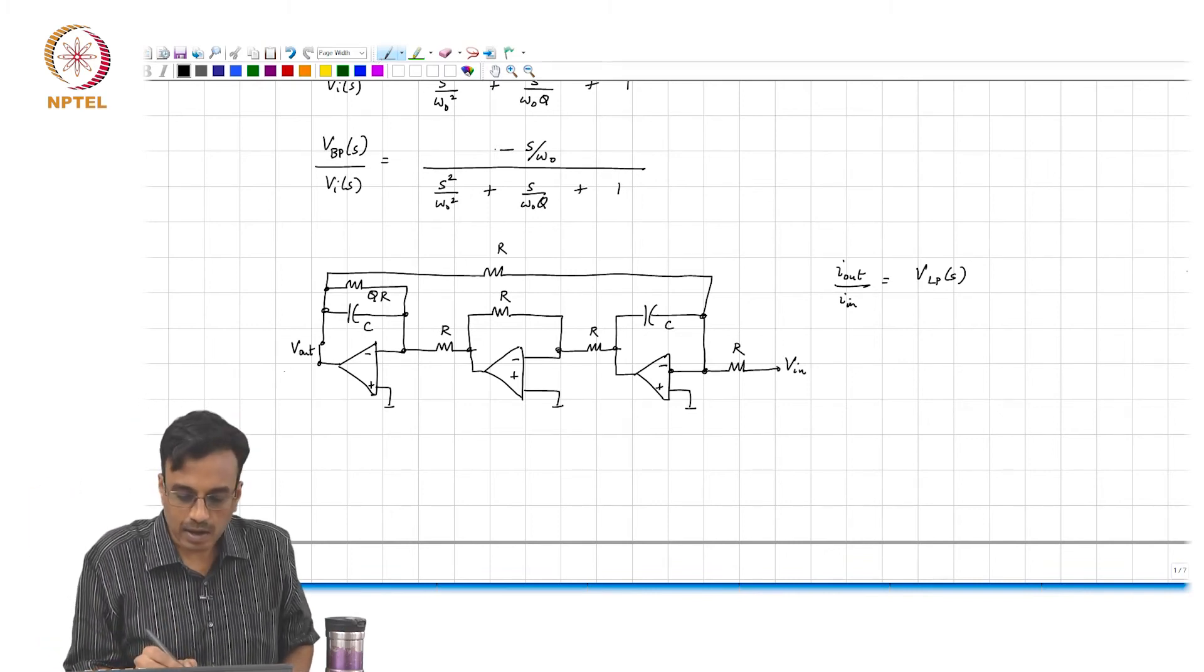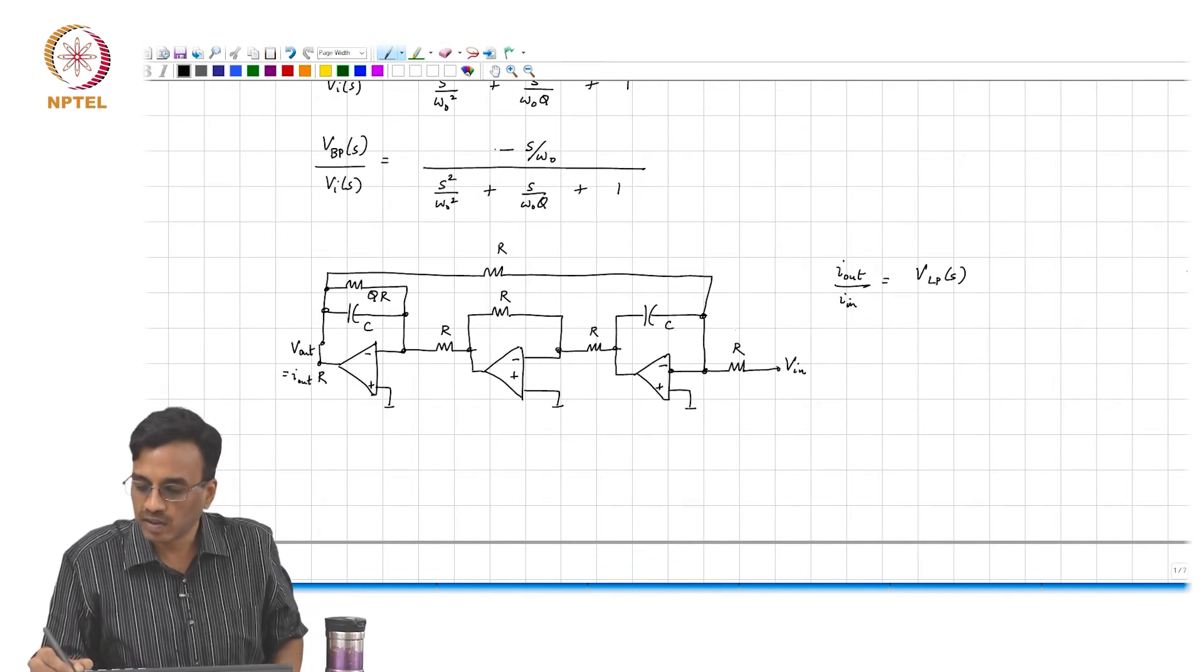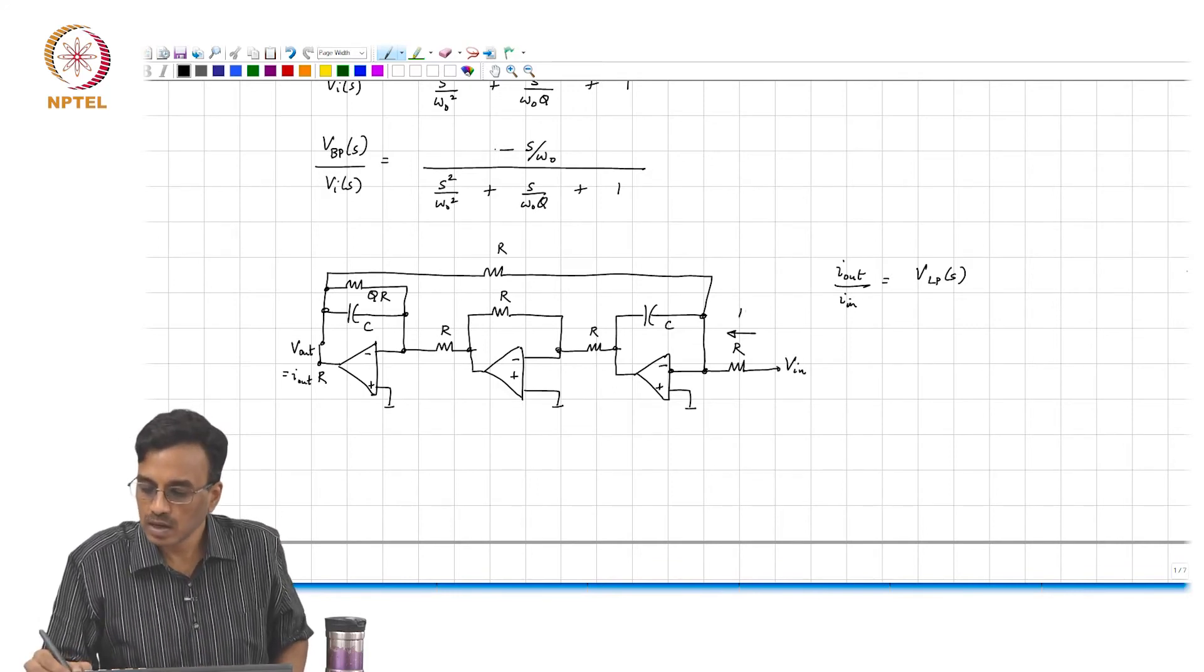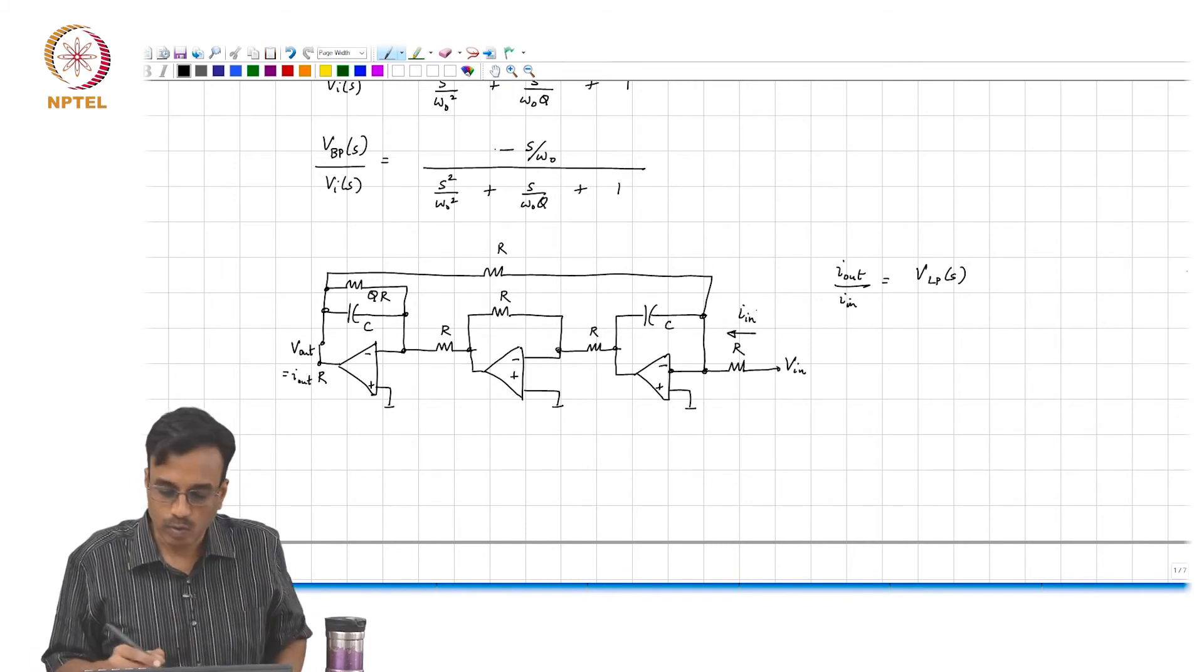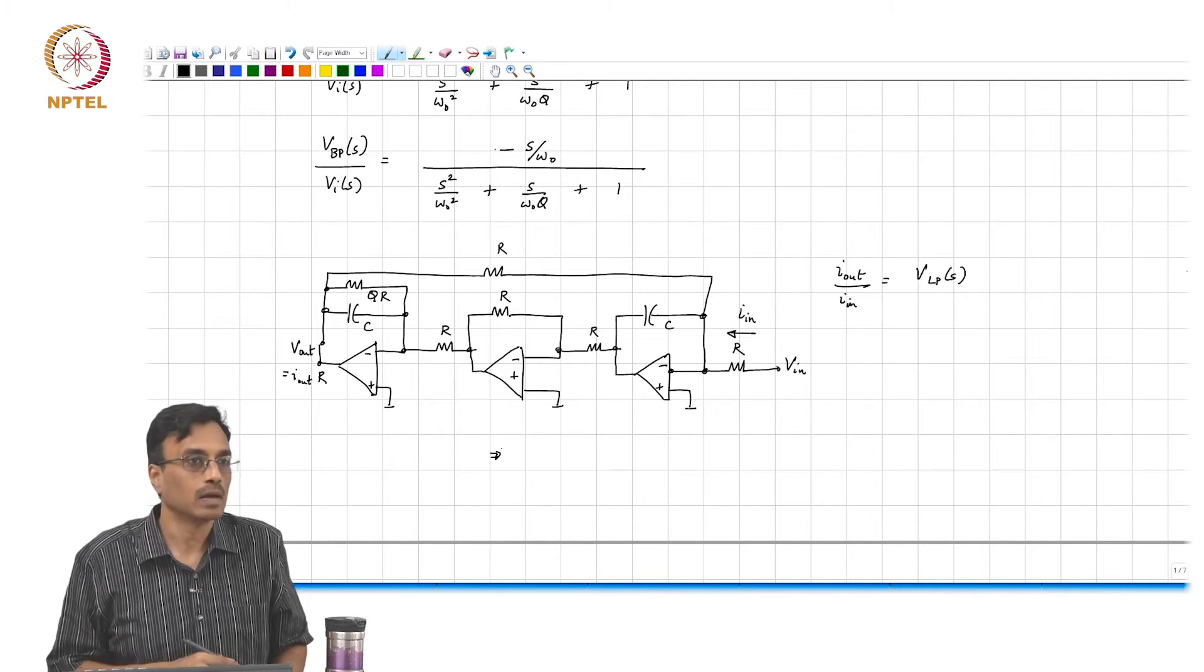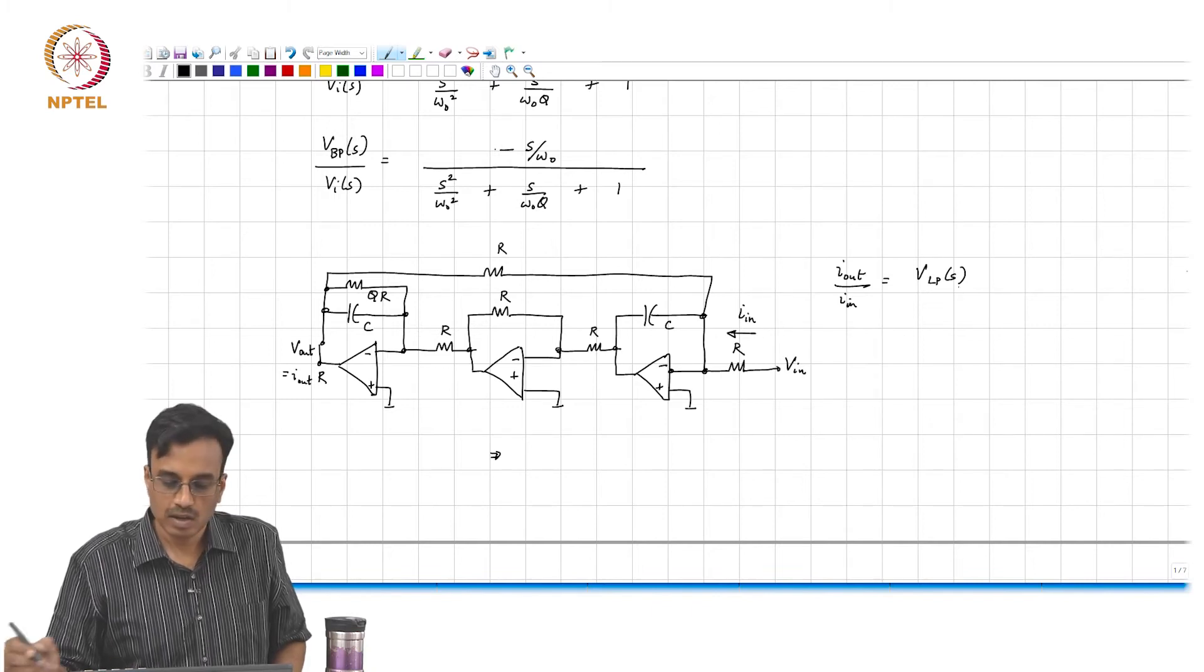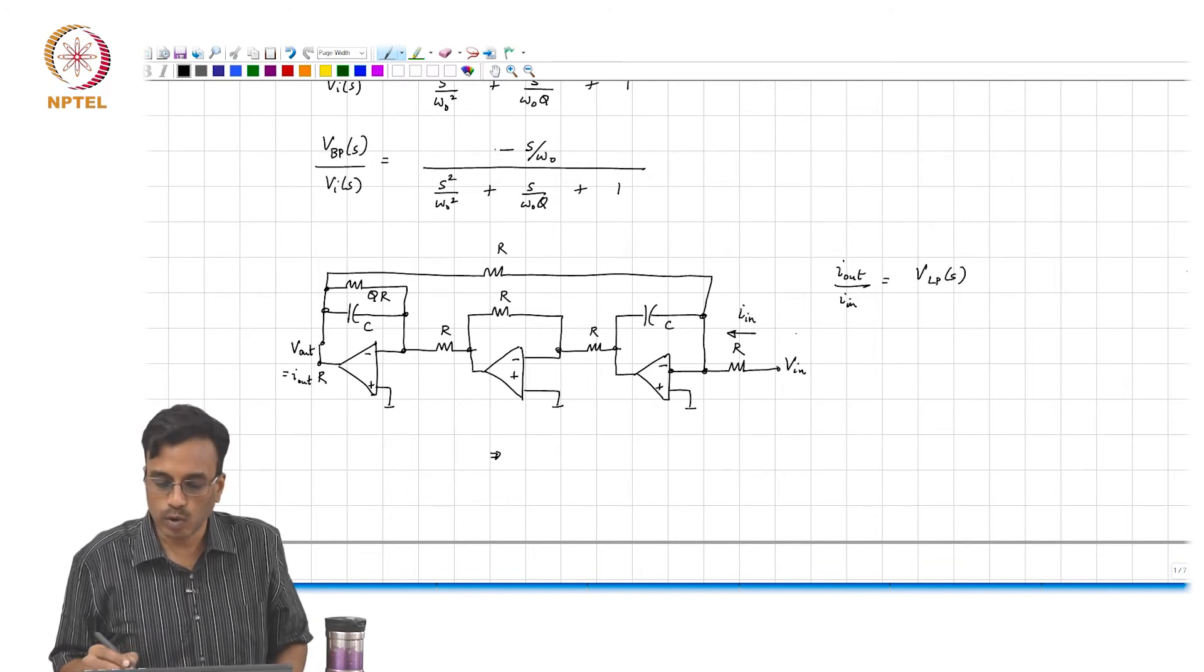This is simply I out times R, and what is the I in that was flowing? How is that related to V in? V in by R. So basically, what is the conclusion therefore, we know that I out by I in is the low pass transfer function. Relating I out to V out and V in, what do we see?